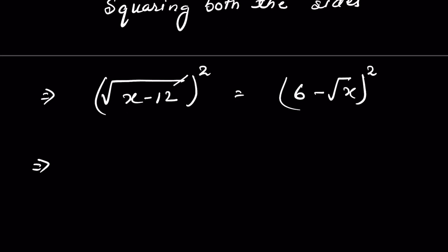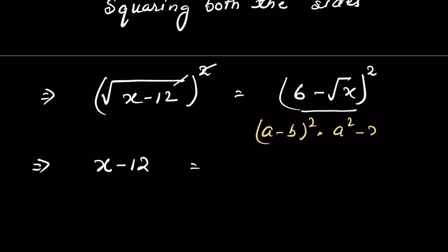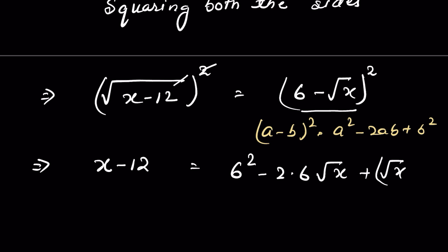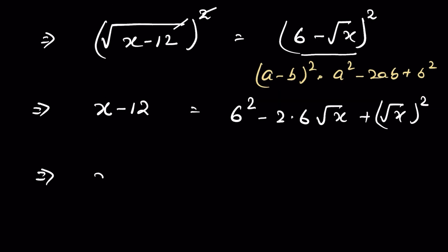We remove the square root with the square, so this gives x minus 12. The right side is in the form of a minus b whole square, so we write it as a squared minus 2ab plus b squared: 6 squared minus 2 times 6 times square root of x plus square root of x squared. So x minus 12 equals 36 minus 12 times square root of x.